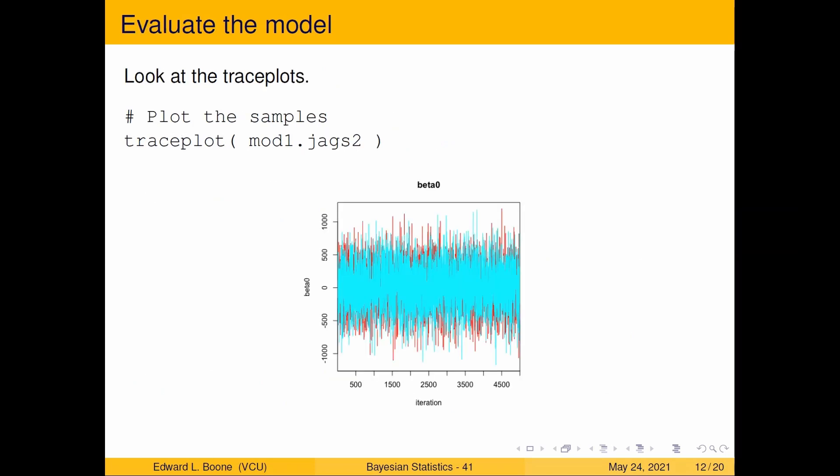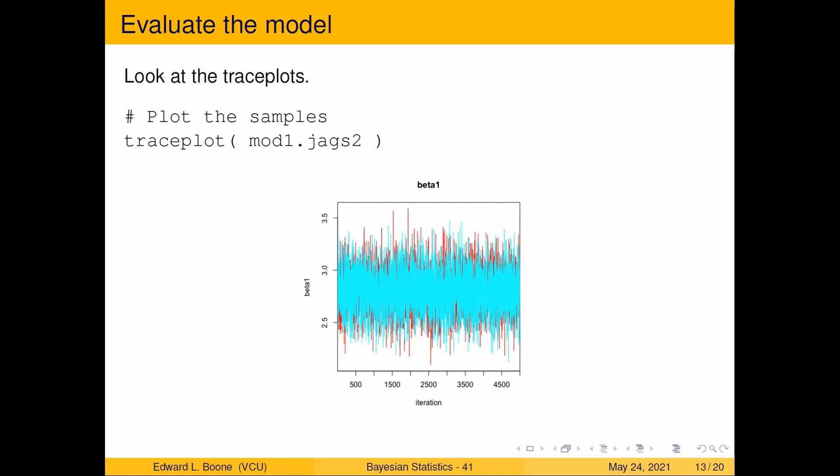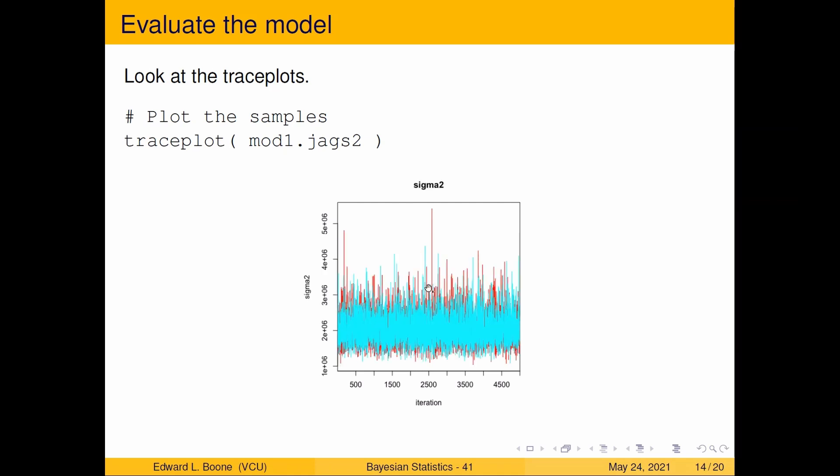Let's look at the trace plots. Beta zero, it's nice and flat, looks like a fuzzy caterpillar, not wandering around anything so I think maybe this is not horrible. For beta one I see a number, it's kind of flat, not wandering around and up and down, it's kind of flat and looks like a fuzzy caterpillar so I'm thinking yeah it's not bad. Sigma squared, again flat fuzzy caterpillar kind of looking thing, so that means it's converged to a stationary distribution.